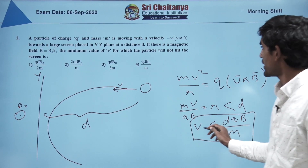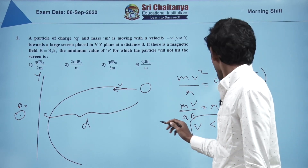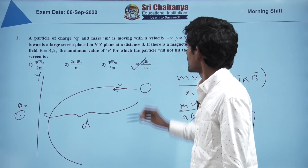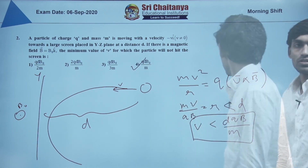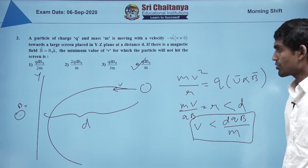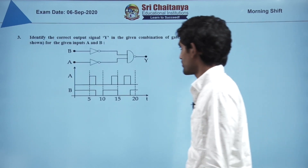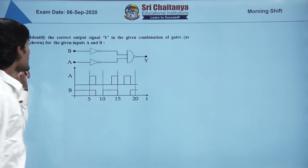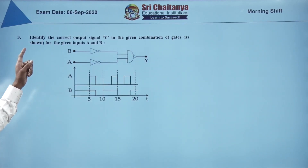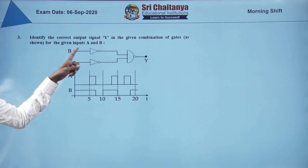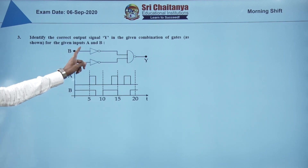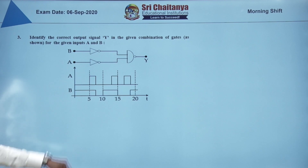The correct option would be the fourth option. Let us go to the next question: identify the correct output signal Y in the given combination of gates for the given inputs A and B.